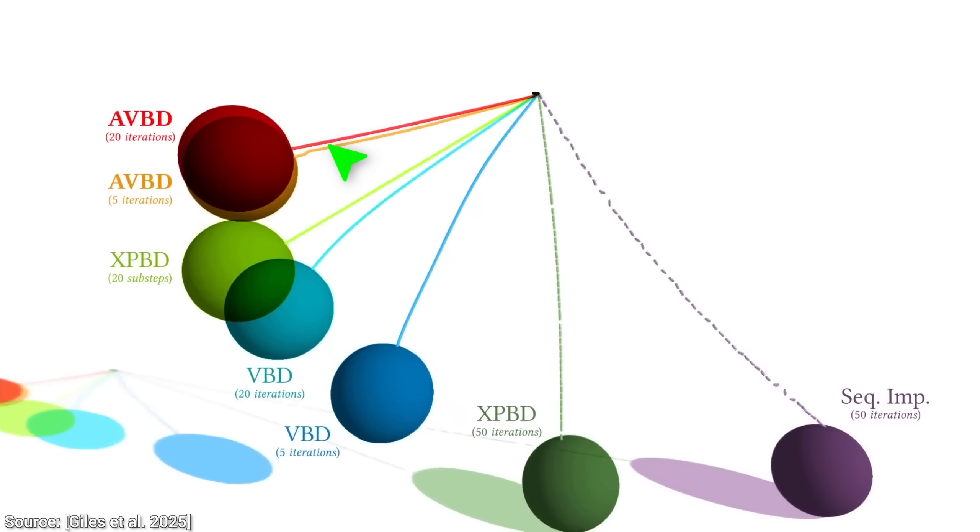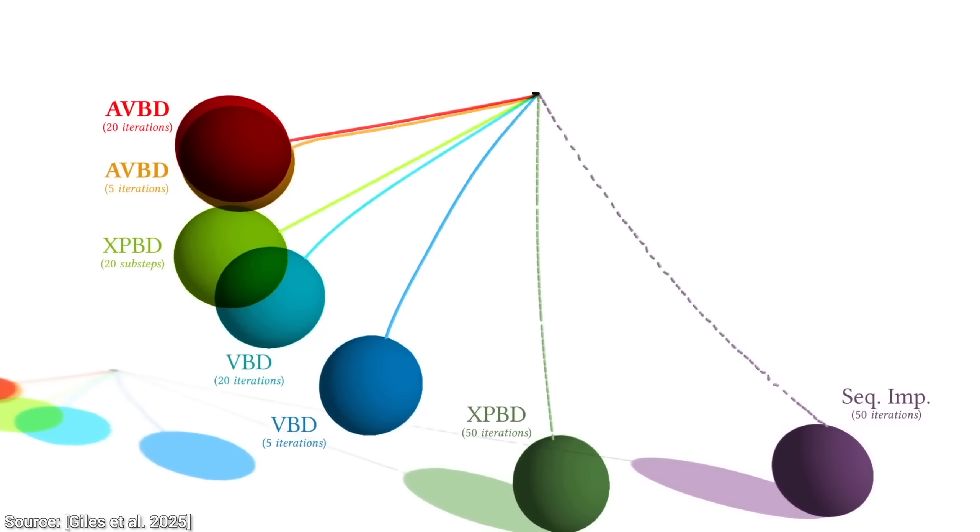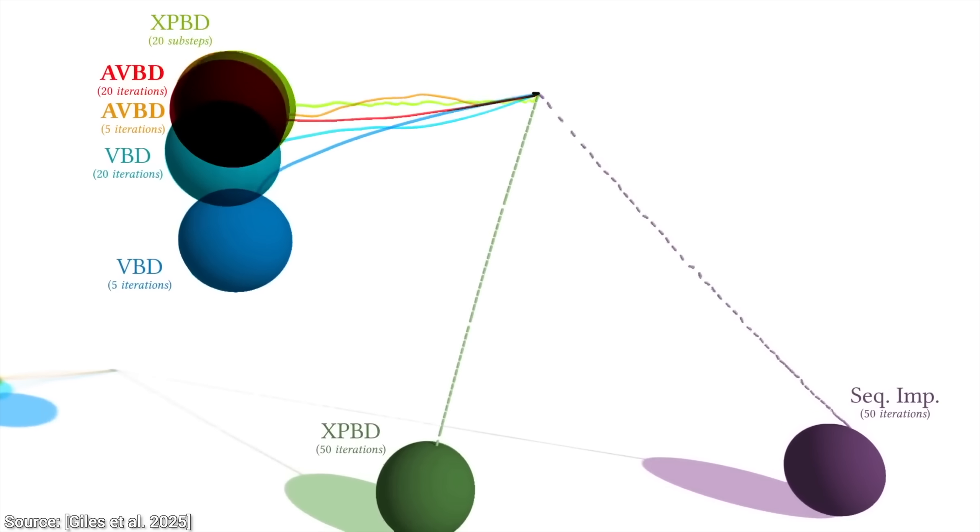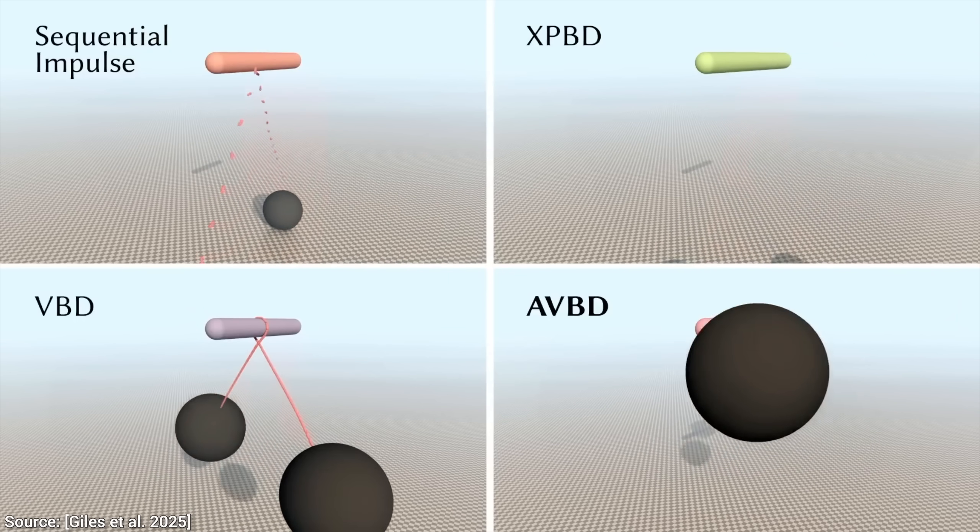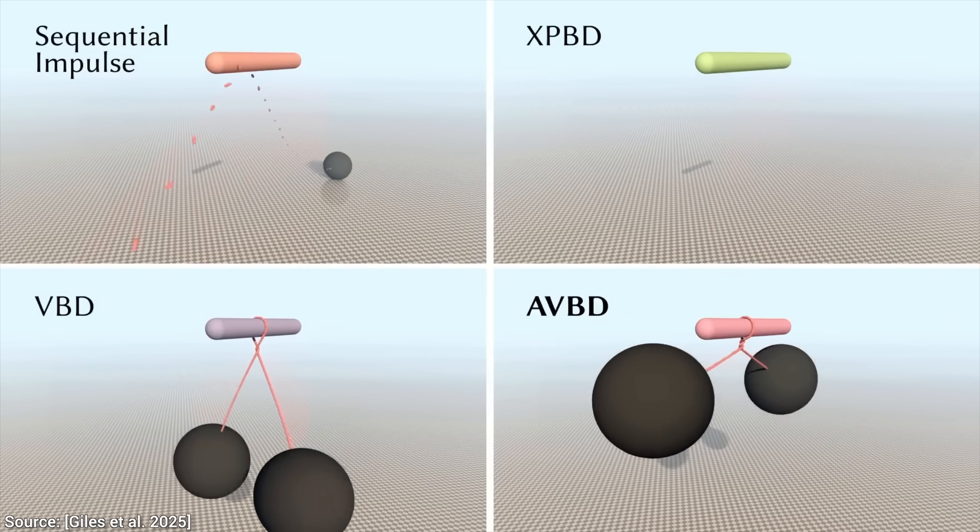And then? The new technique. Augmented vertex block descent. AVBD. Rock solid. This is the moment you realize even the simple things weren't truly solved until now. Bravo!